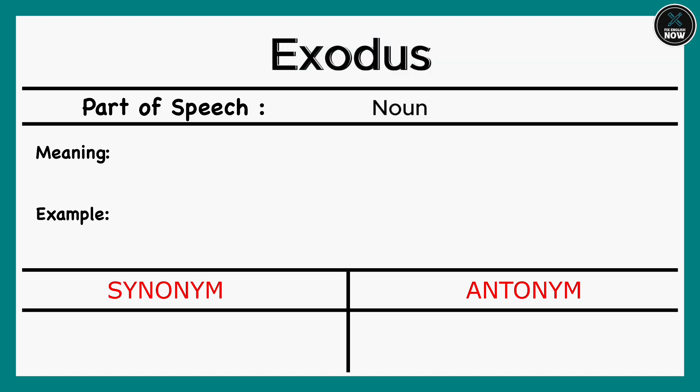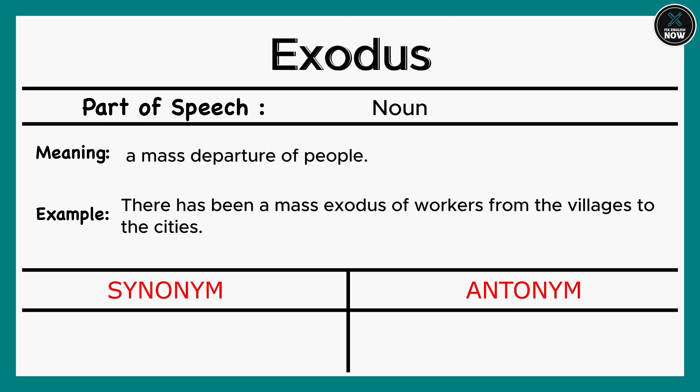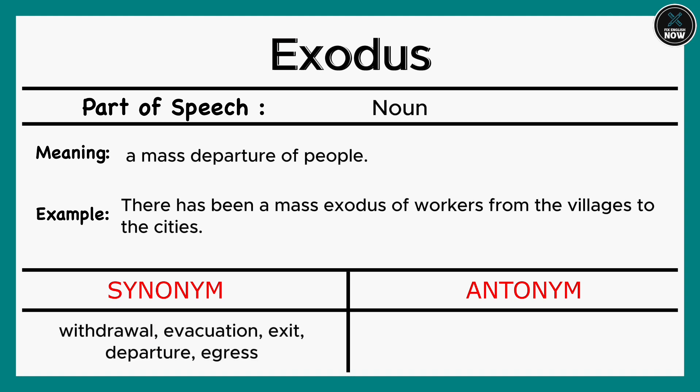Exodus: A mass departure of people. Example: There has been a mass exodus of workers from the villages to the cities. Synonyms: Withdrawal, Evacuation, Exit, Departure, Egress. Antonyms: Arrival, Influx, Inflow, Entry.